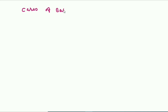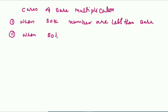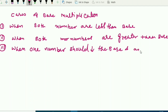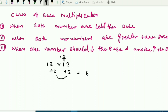Cases of base multiplication: Case 1 — both numbers less than the base. Case 2 — both numbers greater than the base. Case 3 — one number below, one above. For Case 2, example: 12 into 13. Base is 10. Both are above by 2 and 3 respectively. Multiply differences: 2 × 3 = 6. One zero in base, so last digit is 6. Since it's plus, add 3 to 12 to get 15. Answer: 156.